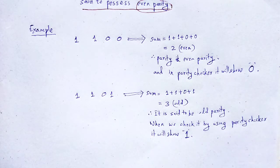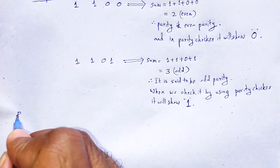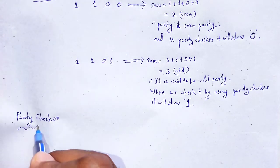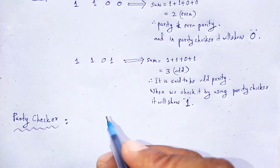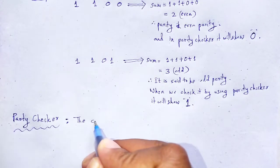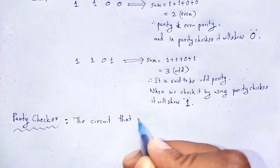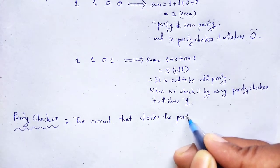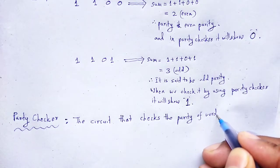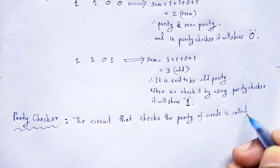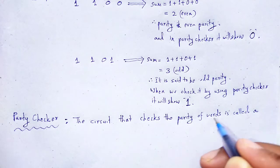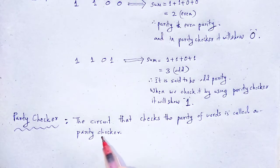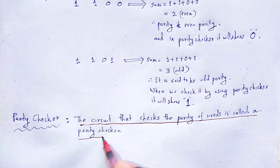The question arises, what is parity checker? Parity checker is one kind of circuit. The circuit that checks the parity of words is called a parity checker. That circuit which checks the parity of that given word is said to be parity checker.